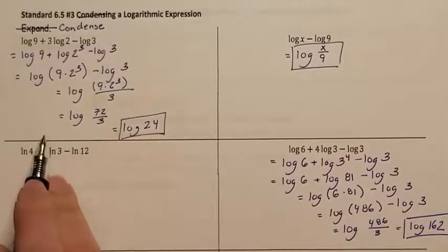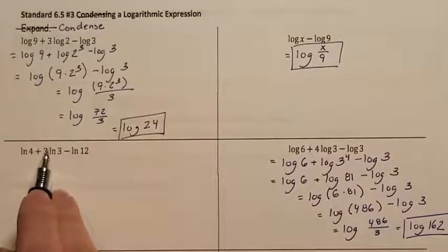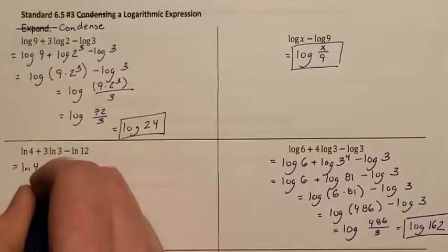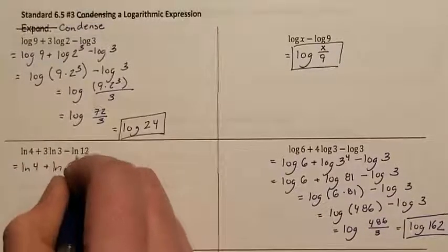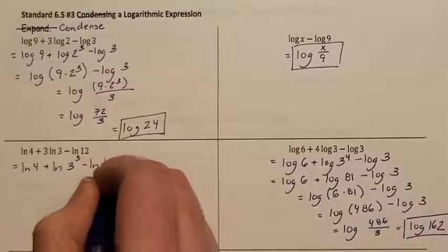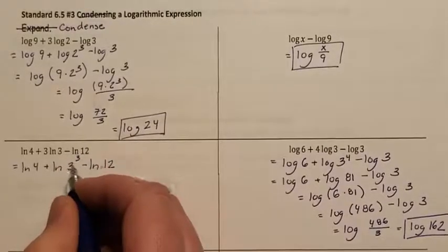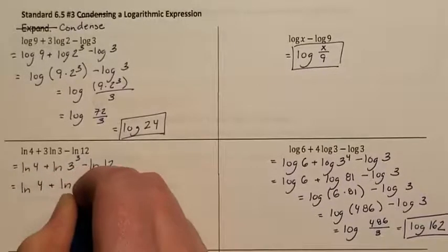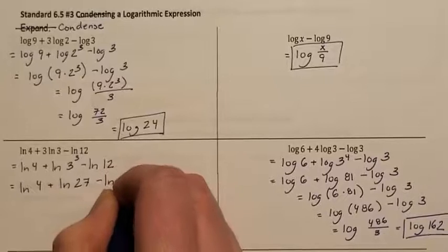Let's do our last one. I see the 3 in front of the natural log. This is supposed to be an exponent. So let's go ahead and make it an exponent. So I have natural log of 4 plus natural log of 3 to the third power minus natural log of 12. What is 3 to the third power? That's 27. So natural log of 4 plus natural log of 27 minus natural log of 12.